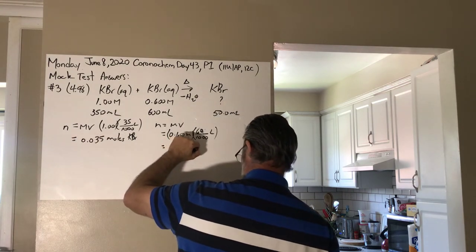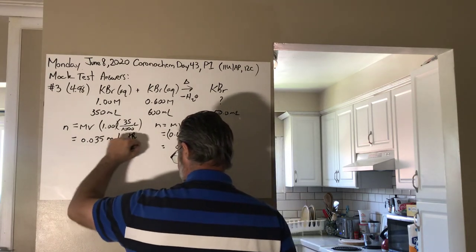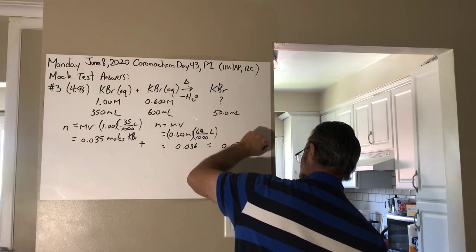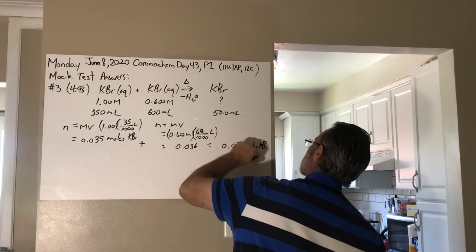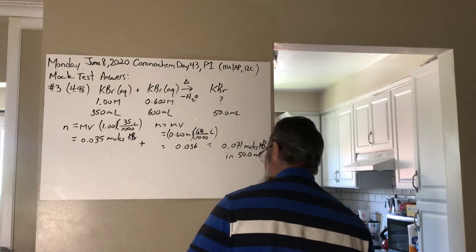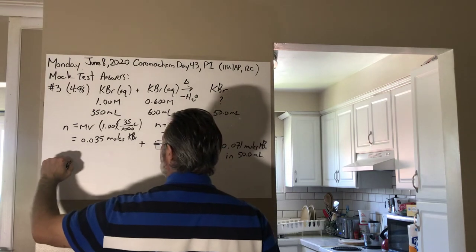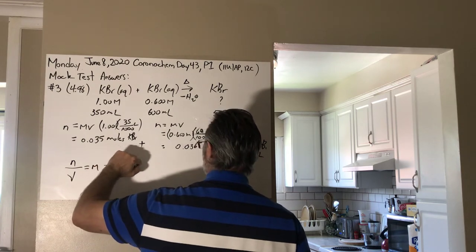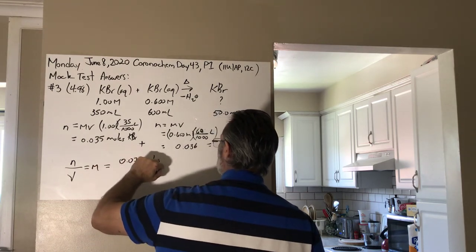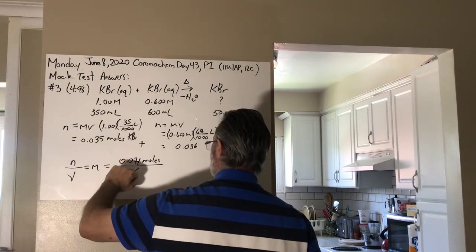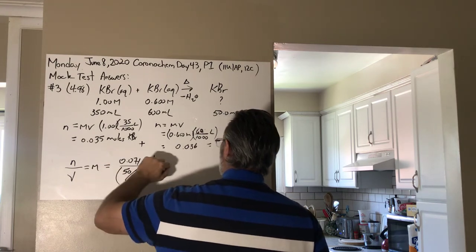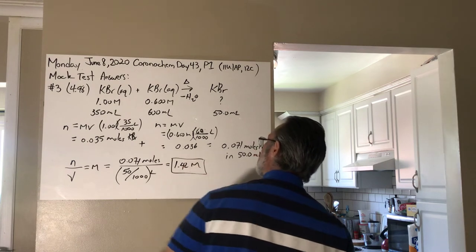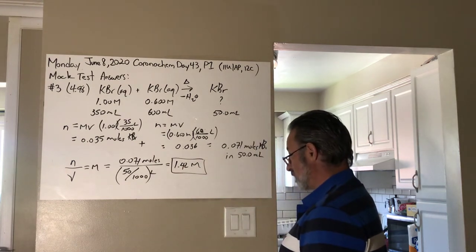When you add these two quantities together, you get 0.071 moles KBr in 50 milliliters of solution. So let's find out the molarity. Since the number of moles divided by the volume gives you molarity, if you have 0.071 moles dissolved in 50 one thousandths of a liter, what you get is a molarity of 1.42. And that's your final answer.